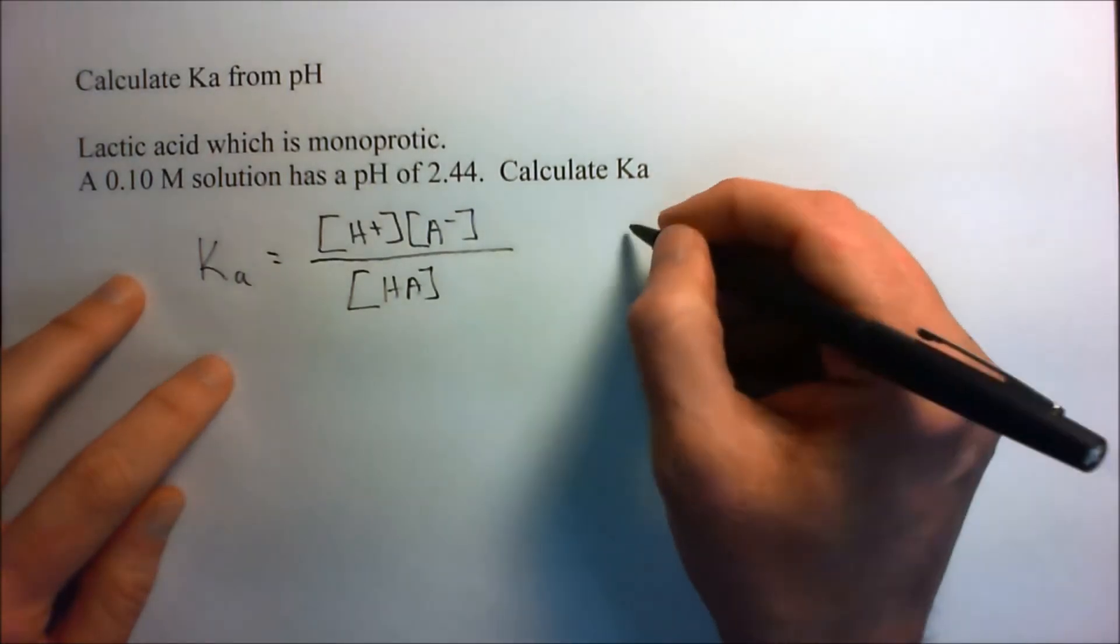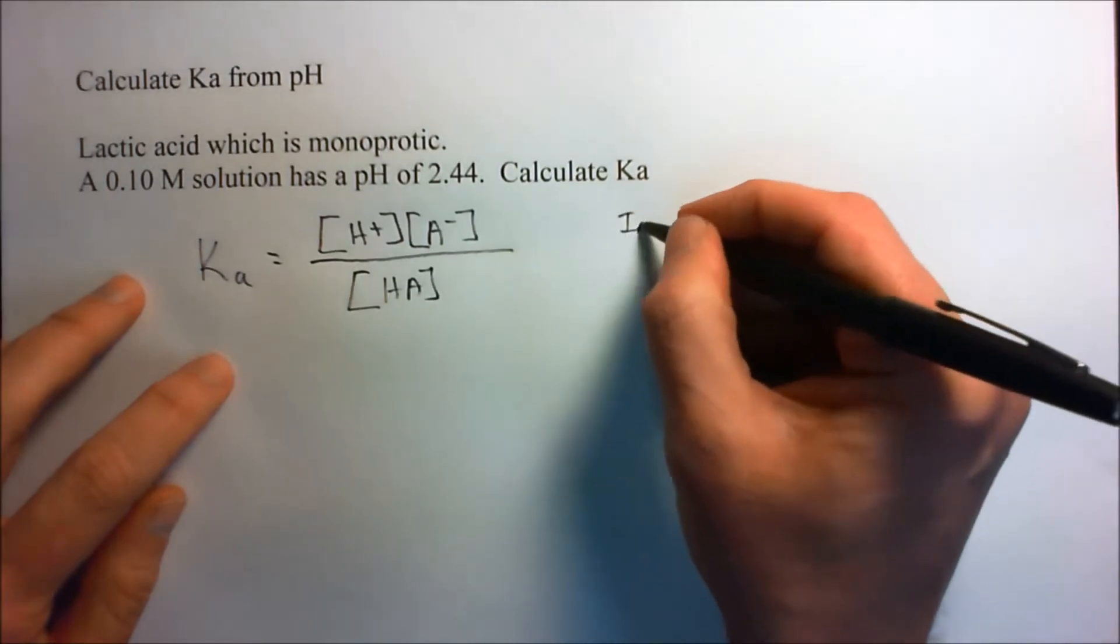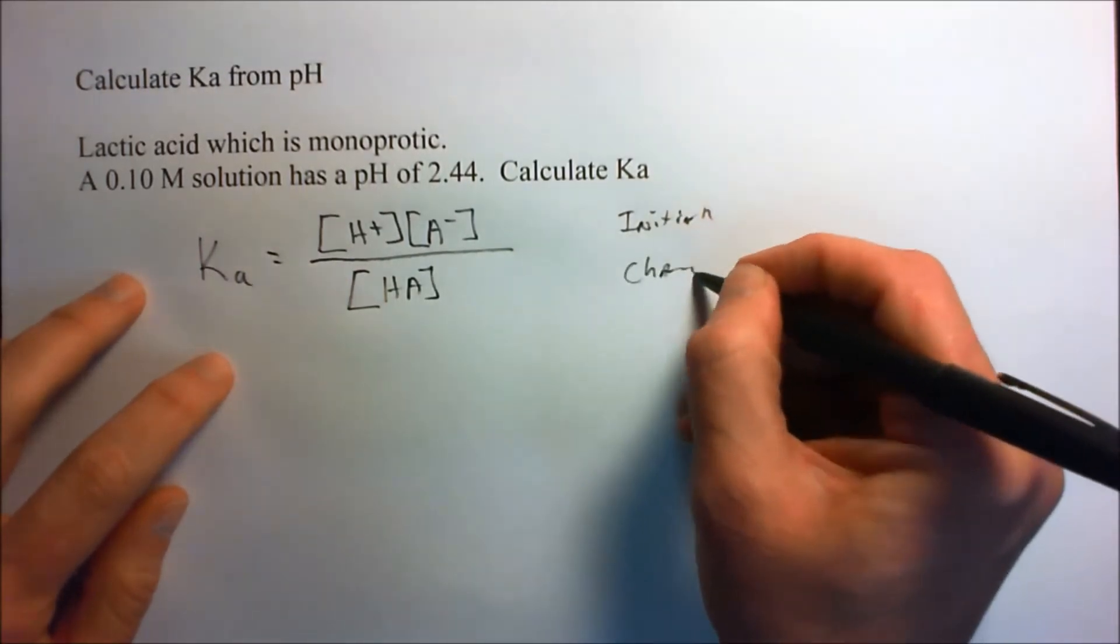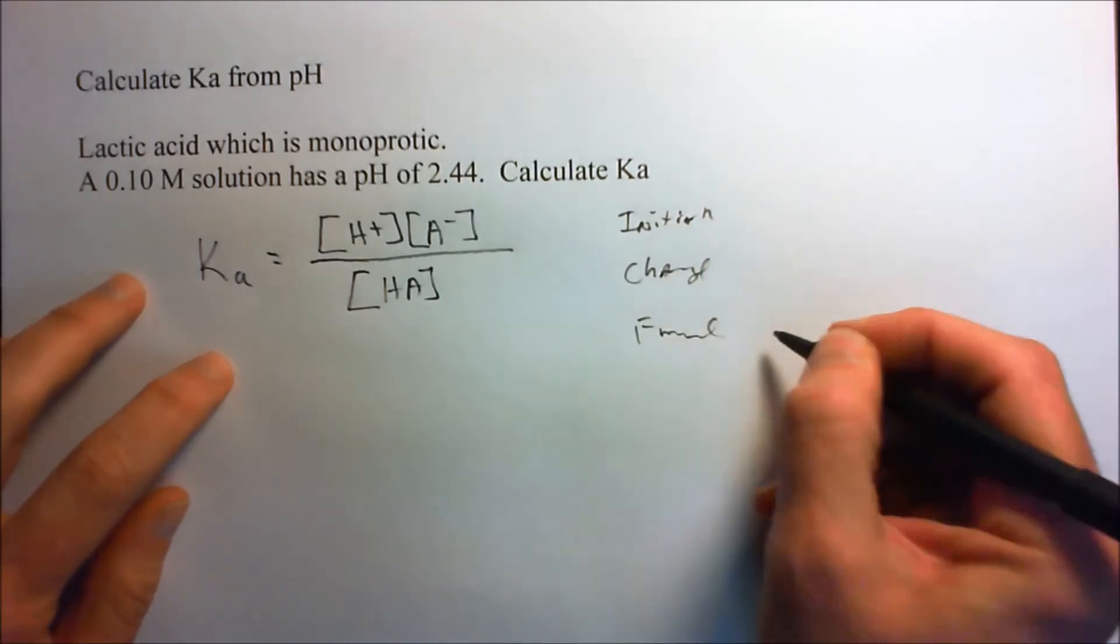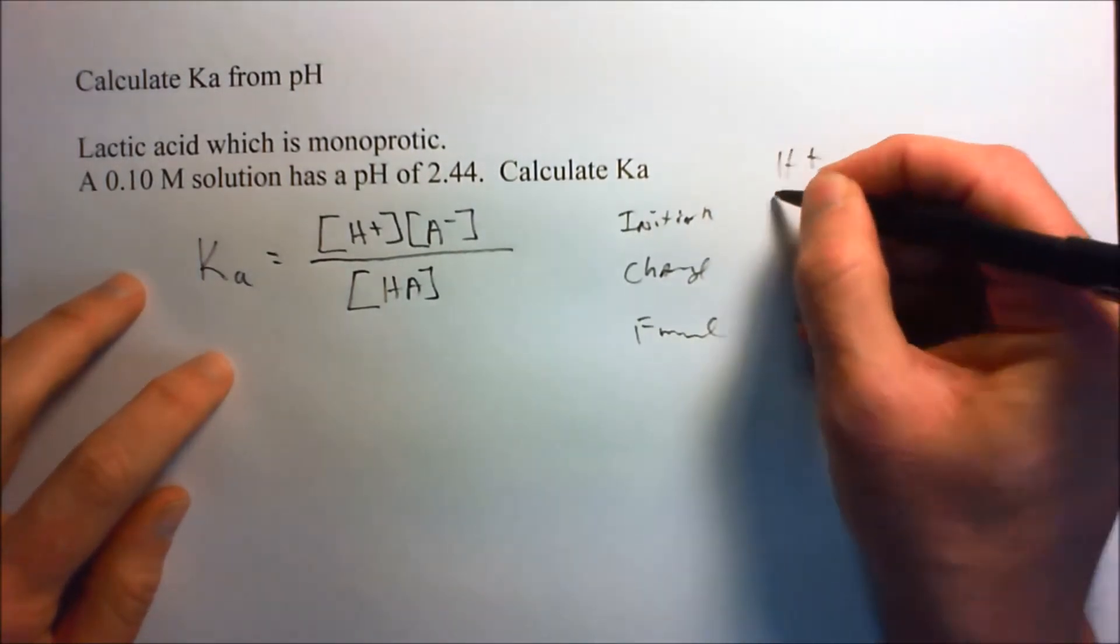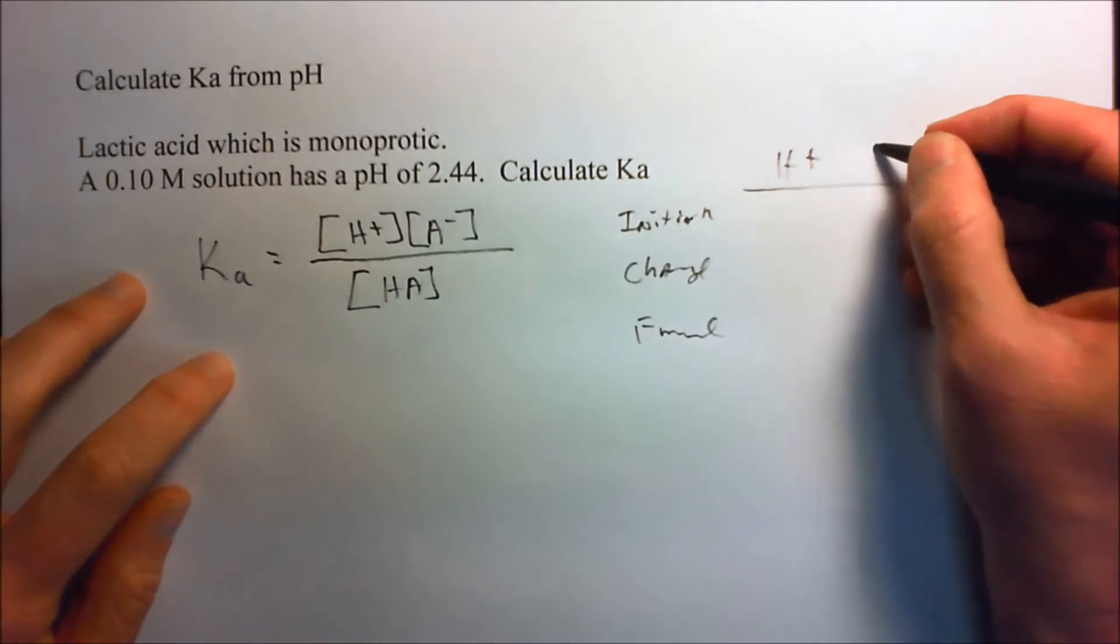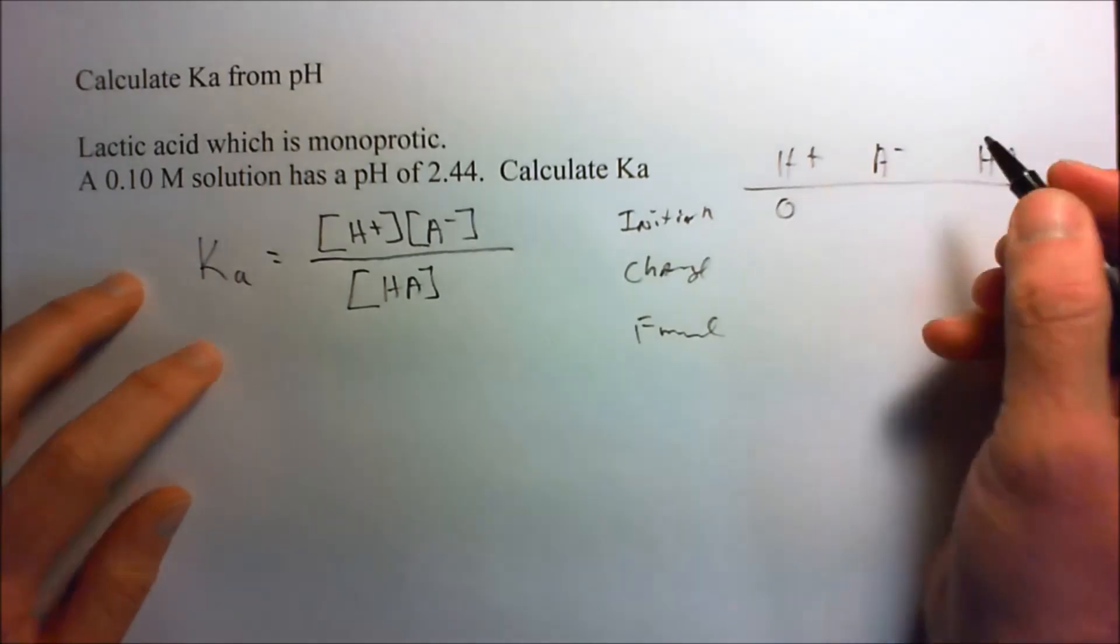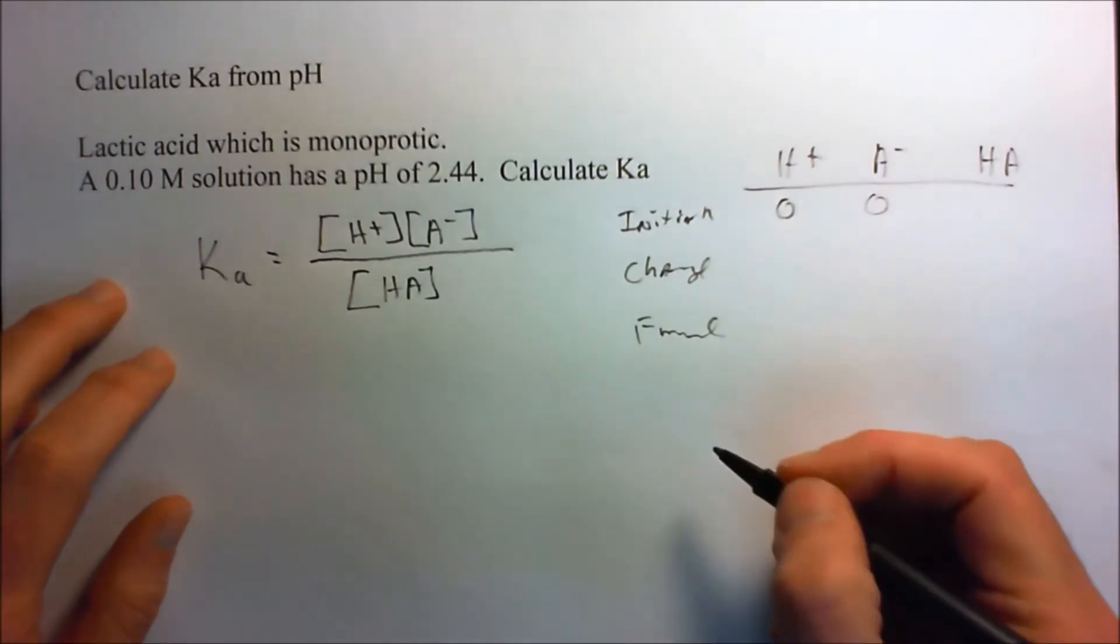Now, if we use our ICE method, we have initial, change, and final. For the conjugate acid and the conjugate base, our initial would be 0 because we dissolved it in there. Same thing for the conjugate base.